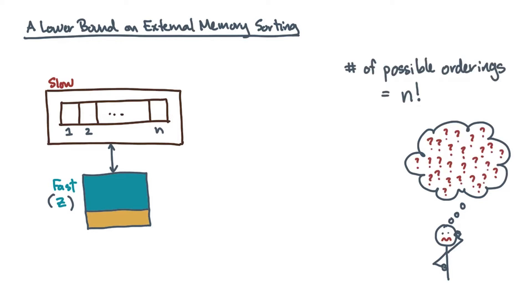Yikes, that's a lot of orderings. Of these orderings, the goal of sorting is to find a specific one in which all the items are in, for example, ascending order. From this point of view, here's a sketch of one way to determine a lower bound.